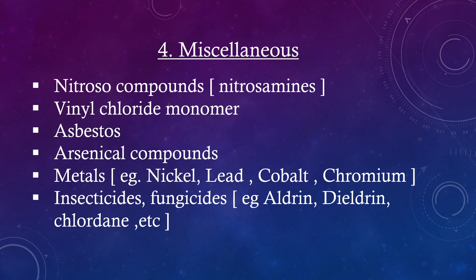Miscellaneous indirect acting carcinogens include nitroso compounds (i.e., nitrosamines), vinyl chloride monomer, asbestos, arsenical compounds, metals such as nickel, lead, cobalt, and chromium, and insecticides and fungicides such as aldrin, dieldrin, and chlordane.